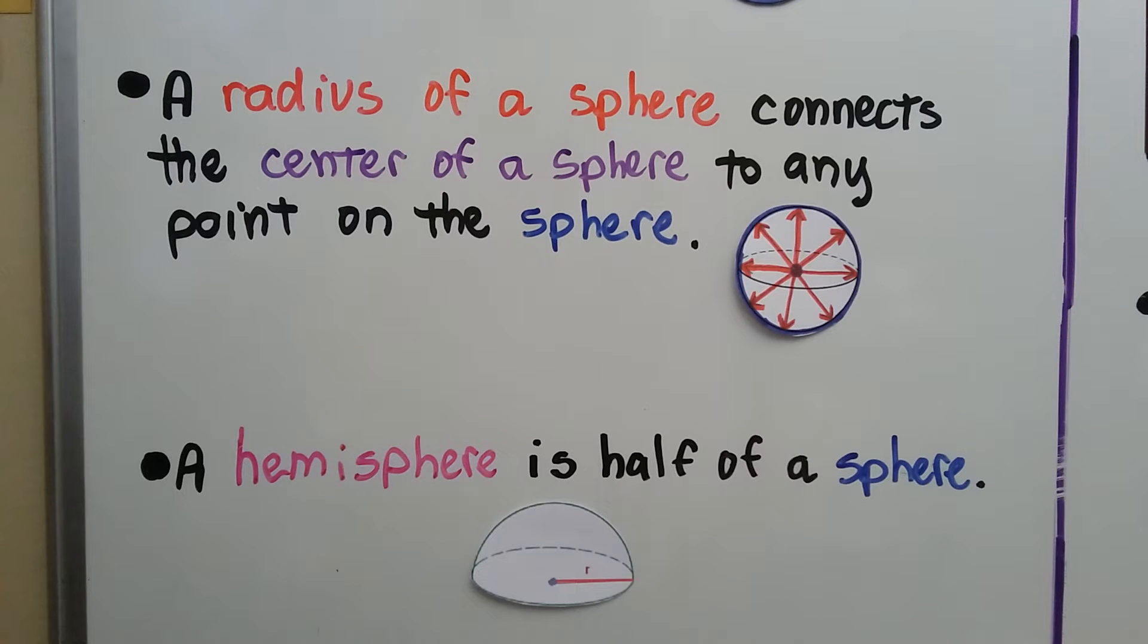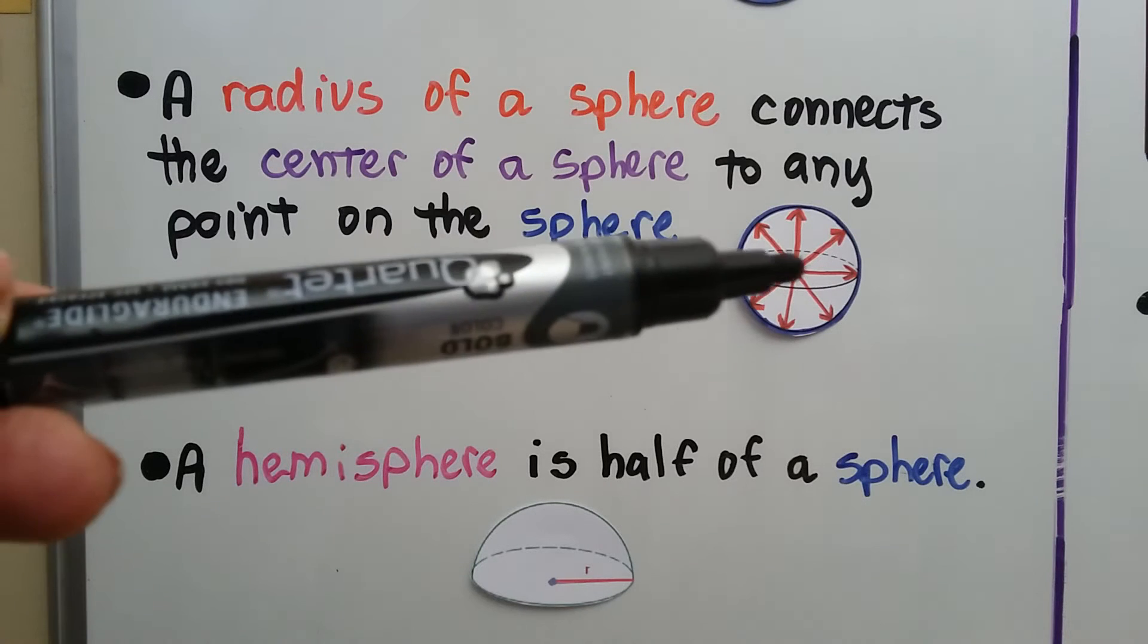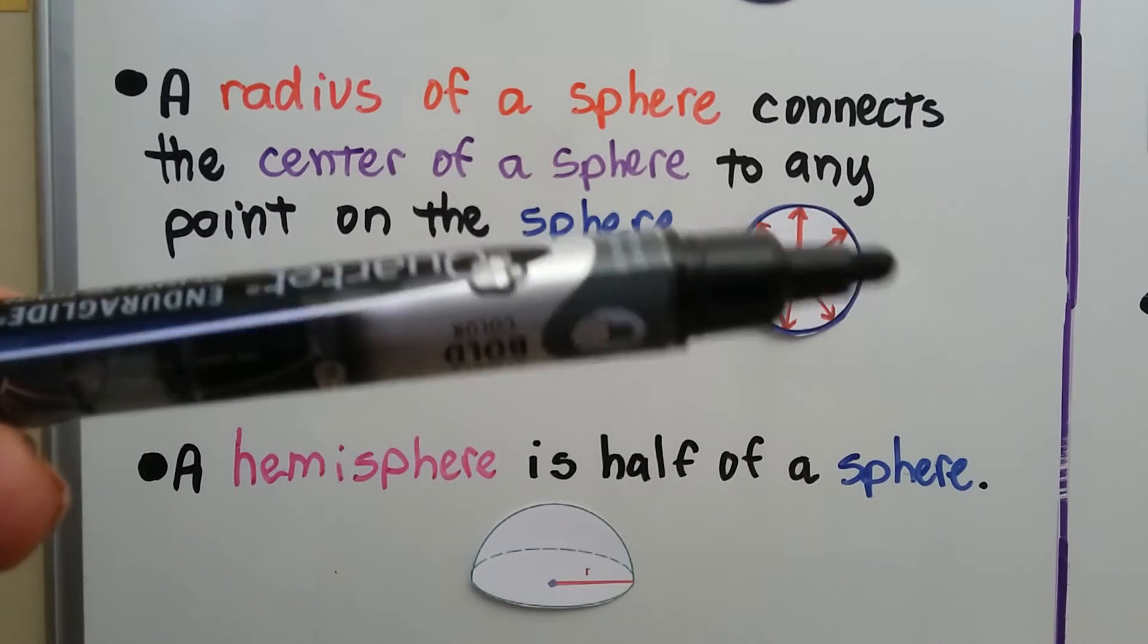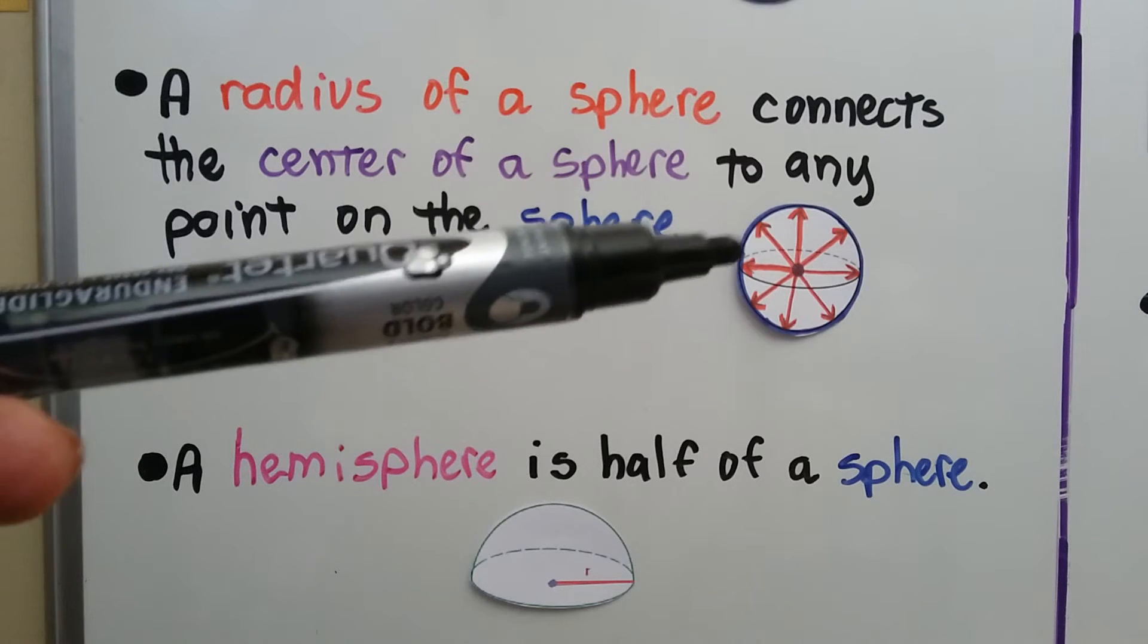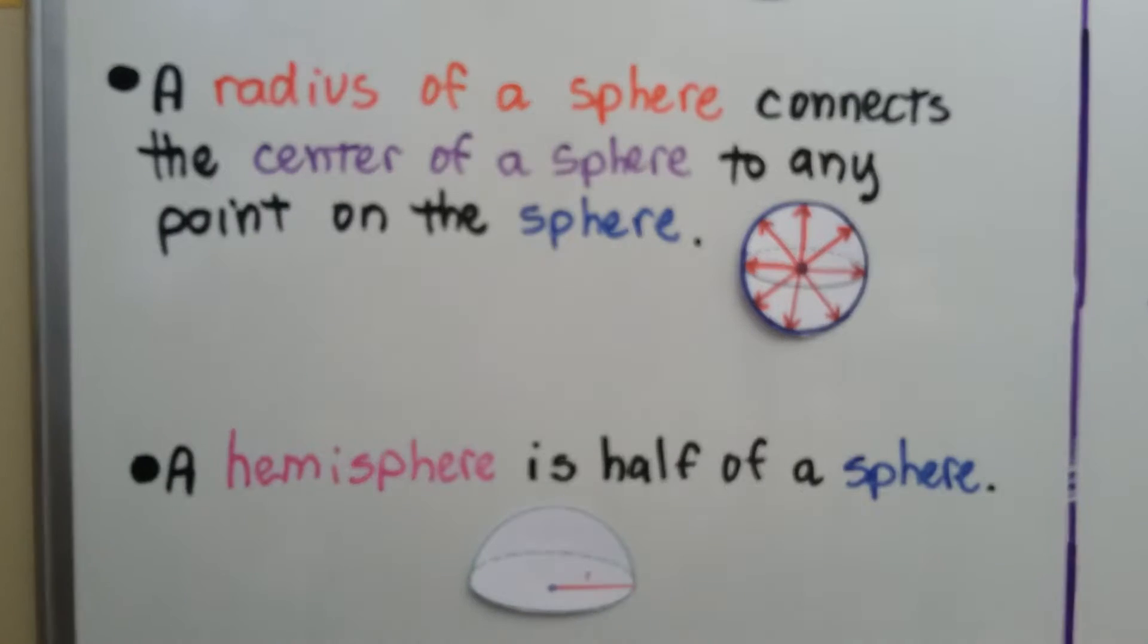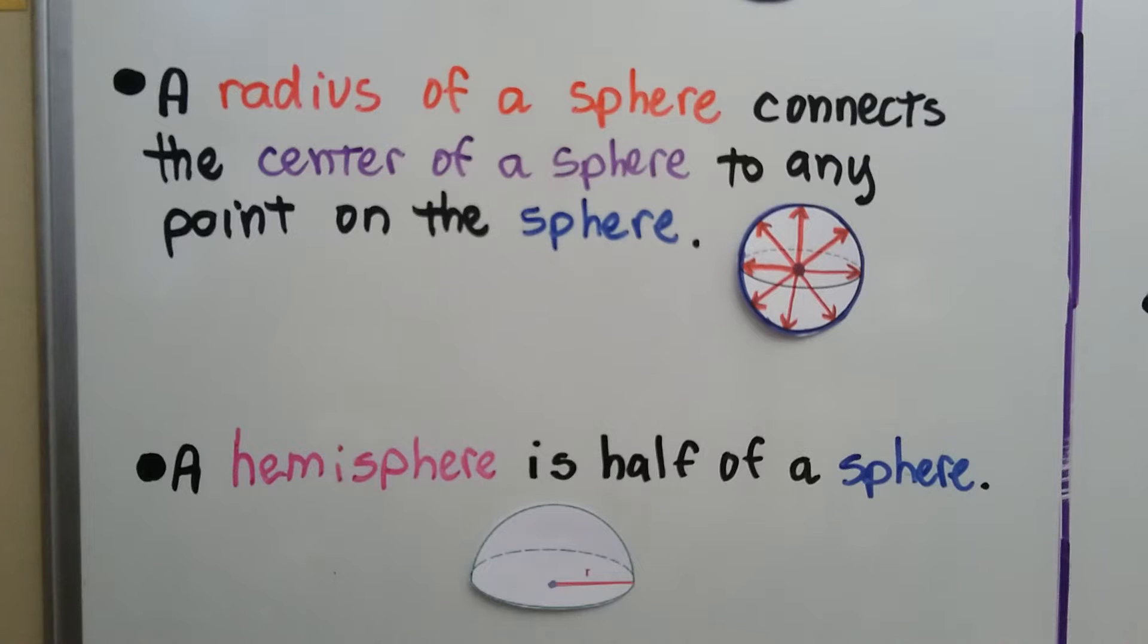A radius of a sphere connects the center of a sphere to any point on the sphere. So from this center point, even coming towards us and going away from us, that would be considered the radius of a sphere.